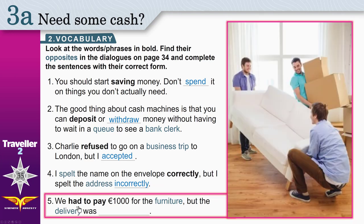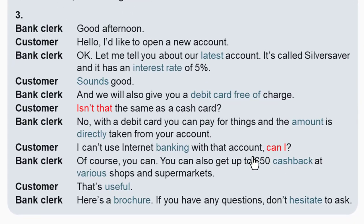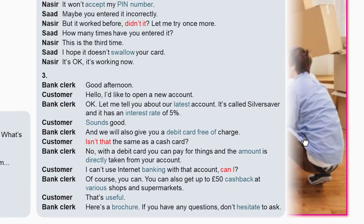Five. We had to pay. Had to is the past of have to — it means must. Pay means give money. One thousand euros for the furniture. Furniture like sofas, chairs, tables. We bought some furniture but the delivery — delivery is the act of bringing goods, bringing the furniture to my house — the delivery was free. You don't have to pay. It is free of charge. Free of charge means you don't pay, it's free.